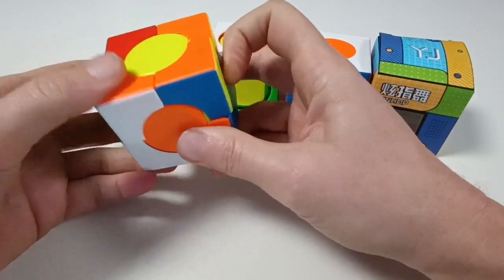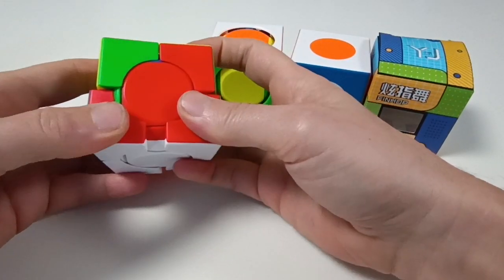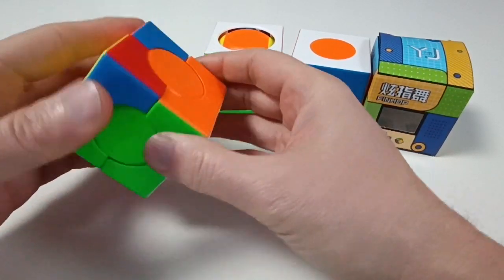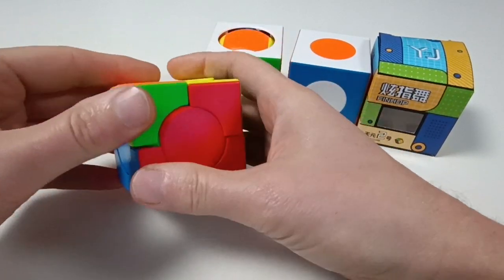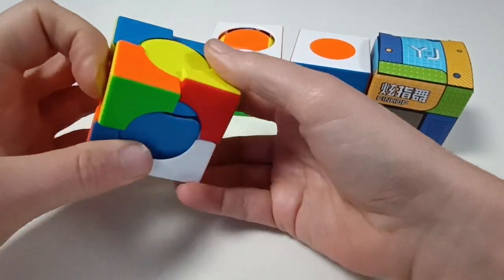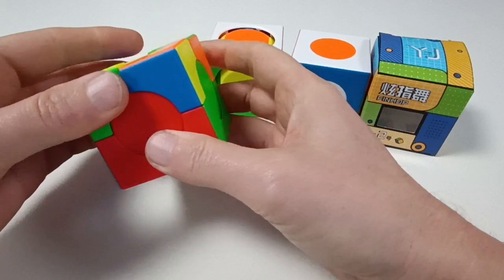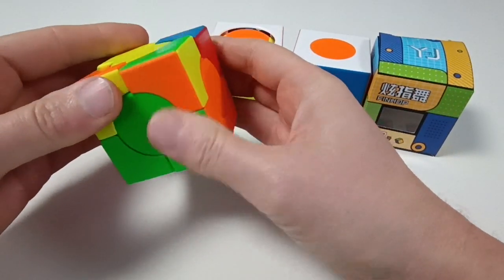Now secondly, okay this is correct and we have to search for all the pieces. Here is one, here is one. So let's input this beginner's method. Okay here it is.